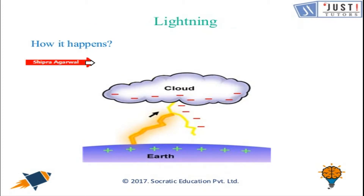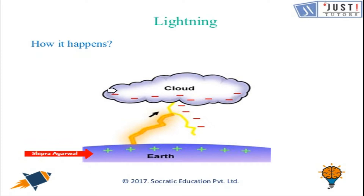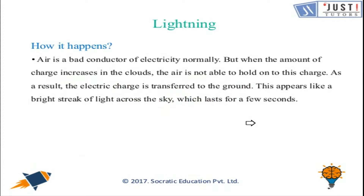During a thunderstorm, air currents move upwards while water droplets come downwards. This movement happens at a very fast pace, resulting in the separation of charges in the clouds. Positive charges collect at the top of the cloud while negative charges collect at the cloud's lower surface. When the clouds are not able to hold such a high amount of charge, this results in lightning — electric charge transferred to the ground appearing as a bright streak of light across the sky. Lightning can damage houses and trees, and can also kill animals and sometimes people.